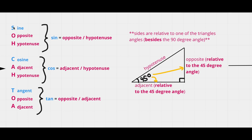The three primary trig ratios are highlighted in blue: sine, cosine, and tangent. There's an acronym called SOHCAHTOA which helps remember what sides each ratio compares. Sine compares the opposite side and the hypotenuse — opposite divided by hypotenuse. Cosine is the adjacent side divided by the hypotenuse. And tangent is the opposite side divided by the adjacent side.